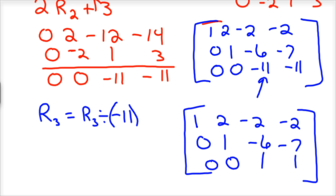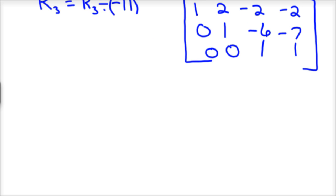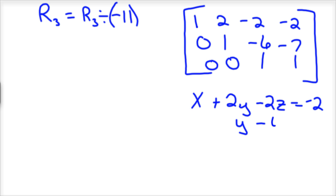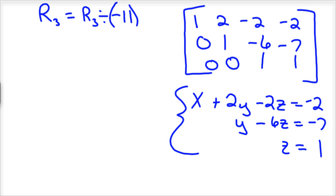Now I'm going to convert that back to equations. The top equation, going back with coefficients and variables, would be x plus 2y minus 2z equals negative 2. Then 0x plus y minus 6z equals negative 7. And 0x plus 0y plus z equals 1. So we know z is equal to 1.